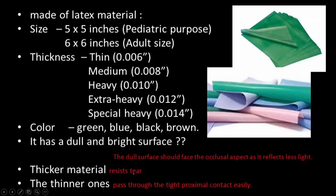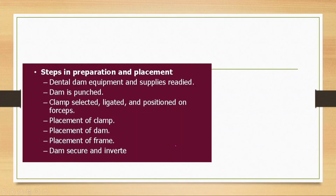Thicker rubber dam material resists tearing, while thinner ones pass through tight proximal contacts easily. Steps in rubber dam placement: prepare dental dam equipment and supplies, punch the dam, select and ligate the clamp and position on forceps, place the clamp, place the dam, then secure the frame.